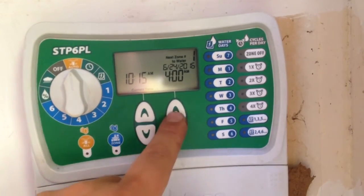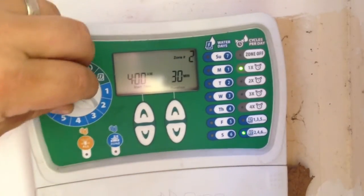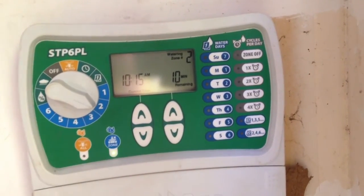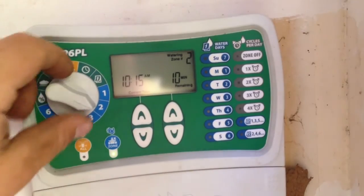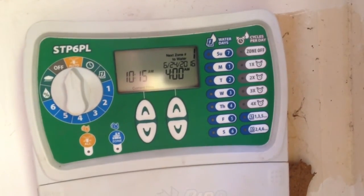If I hit the single zone button, I believe I have to just select it. Like, select the zone 2 on the dial and then zone 2 will run. And it will shut off as soon as you move the dial.